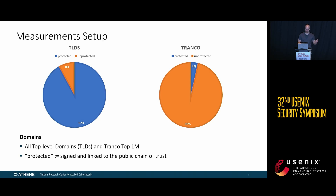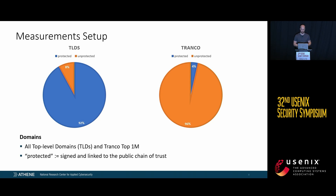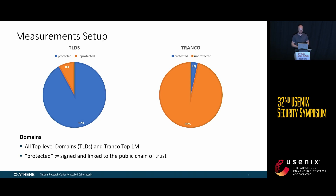In our studies, we measured both domains and resolvers. On the domain side, we measured the top-level domains and the Tranco top 1 million domains. We found that most top-level domains are protected — meaning they are signed within DNSSEC and have a link to the public chain of trust. On the Tranco side, it's essentially the other way around: only 4% were protected.